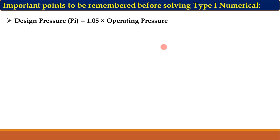In the last lecture, we discussed design pressure. Design pressure is more than the actual internal pressure — that is, it is more than the operating pressure. Design pressure pi is equal to 1.05 times the operating pressure. The operating pressure will be given in the numerical, and you need to calculate design pressure by multiplying 1.05 to it.